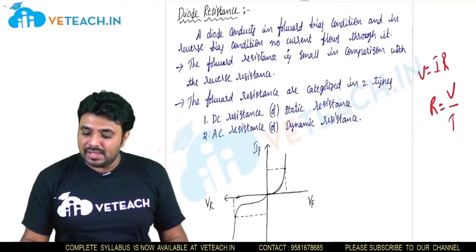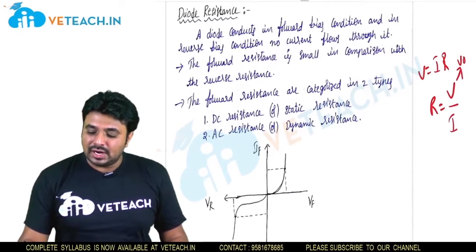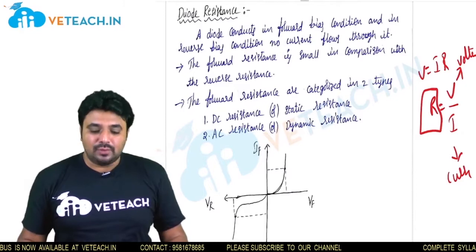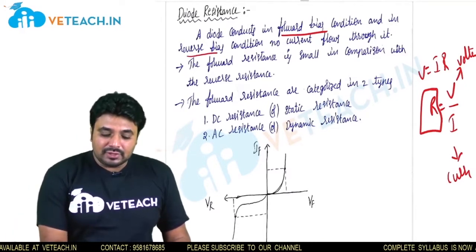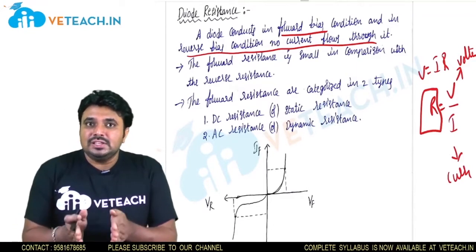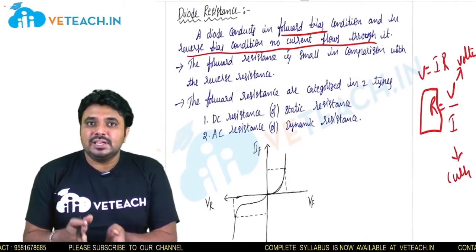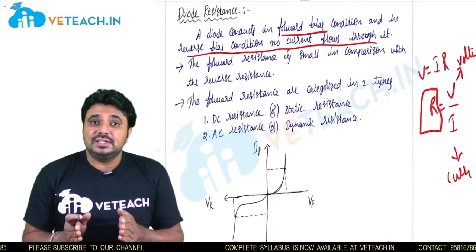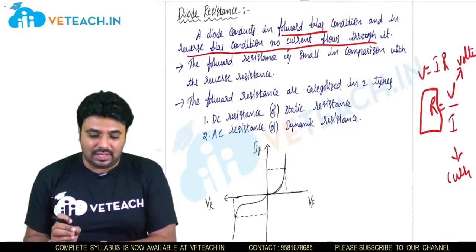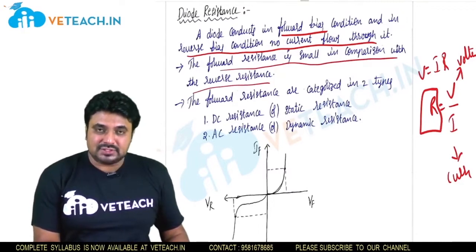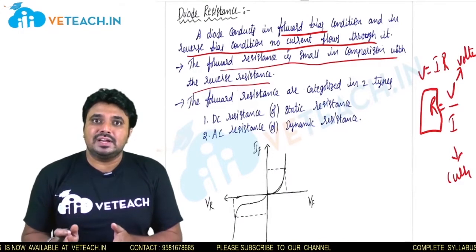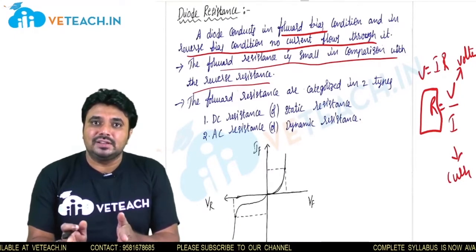From Ohm's law, V equals IR, so R equals V by I. The diode conducts in forward bias, and in reverse bias no current flows through it. In reverse bias, the diode is not conducting, meaning it is not allowing electrons from N-type to P-type semiconductor material. So in reverse bias it has large resistance, and in forward bias it has less resistance because some current is allowed to flow. The forward resistance is small compared to reverse resistance. In reverse bias we call it reverse resistance, and in forward bias we call it forward resistance.